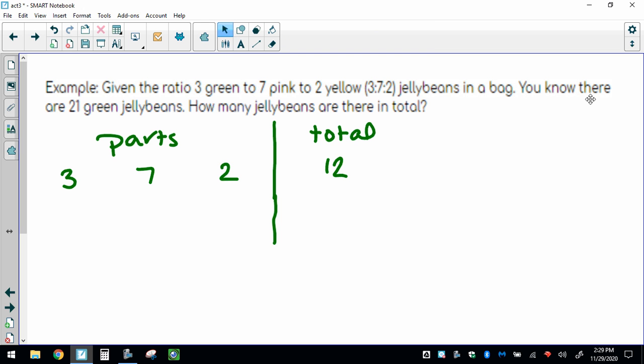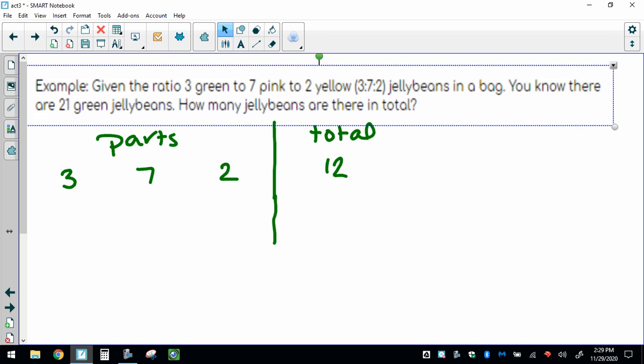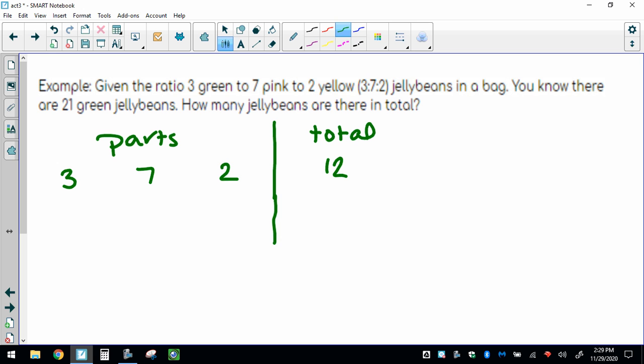Now, look at this. You know that there are 21 green jelly beans. Well, 21 green jelly beans—the first one is my green ones, so I'm going to put a 21 down here underneath the green part.